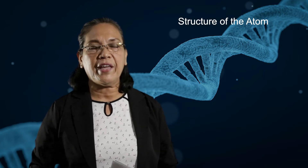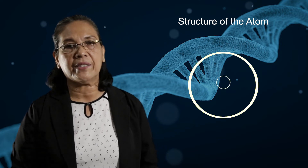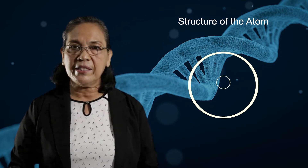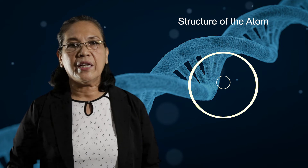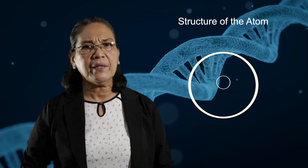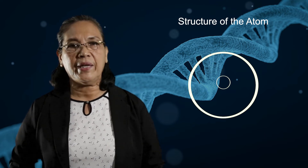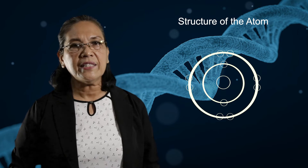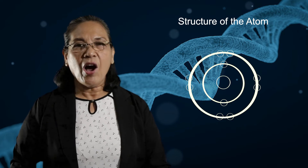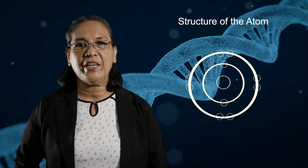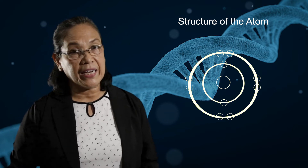Now let's go to the structure of the atom. At the centermost of the atom is found the nucleus. In the nucleus, as I said, are composed the protons and the neutrons. The protons are the positively charged particles while the neutrons are chargeless. And outside the nucleus are the electrons, which are negatively charged particles. These electrons occupy what we call energy levels, and an energy level represents a volume of electron cloud.